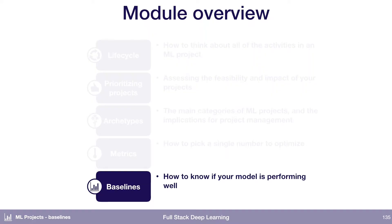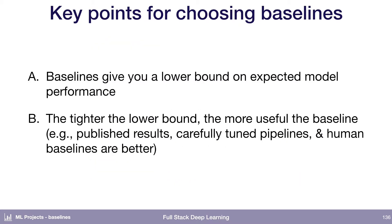The last topic I want to cover is: once you have a number that you're trying to drive down — your metric — how do you actually know whether your model is performing well on an absolute level? The key points I'm going to cover here are that the purpose of baselines is to give you a lower bound on how well you can expect your model to perform. And the tighter that lower bound is — the better your baseline — the more useful it is.